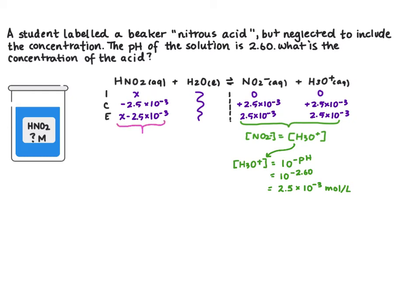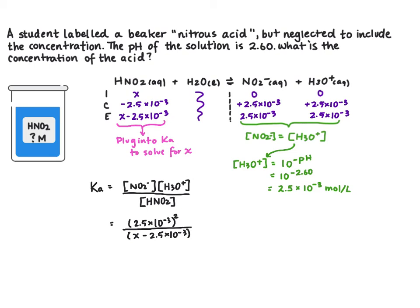We're going to plug this into Ka. Ka is going to equal our conjugate base concentration, so nitrite times hydronium, divided by nitrous acid. So this will equal 2.5 times 10 to the minus 3 moles per liter squared, divided by X minus 2.5 times 10 to the minus 3, and we can look up the Ka of nitrous acid which is 5.6 times 10 to the minus 4.